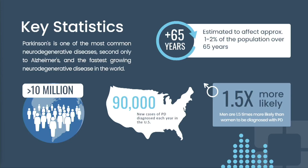Some key statistics: Parkinson's is one of the most common neurodegenerative diseases, second only to Alzheimer's disease, and it's the fastest growing neurodegenerative disease in the world. 90,000 new diagnoses are made each year in the U.S., and 10 million people live with Parkinson's disease worldwide, with one million of those in the U.S. Men are about one and a half times more likely than women to develop Parkinson's, and in the population over 65, it affects about one to two percent.